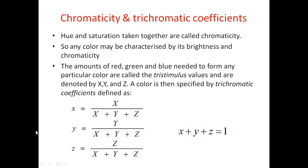Similarly, the trichromatic coefficient for green, small y, is given by capital Y divided by capital X plus capital Y plus capital Z. The trichromatic coefficient for blue, small z, equals capital Z divided by capital X plus capital Y plus capital Z. Since x, y, and z are relative amounts of the three color contributions, their sum must equal 1: small x plus small y plus small z equals 1. This means if you know any two trichromatic coefficients, you can always find the third.